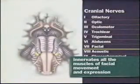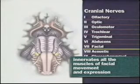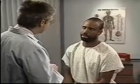Cranial nerve 7, the facial nerve, innervates all the muscles of facial movement and expression. It also mediates taste sensation in the anterior two-thirds of the tongue. To assess this nerve, inspect the patient's face at rest and during conversation. Note any asymmetry and look for tics or other involuntary movements. Next, ask the patient to raise his eyebrows, frown, close his eyes tightly, show his teeth, smile, and puff out his cheeks. Normally, the patient can do these maneuvers easily and symmetrically.